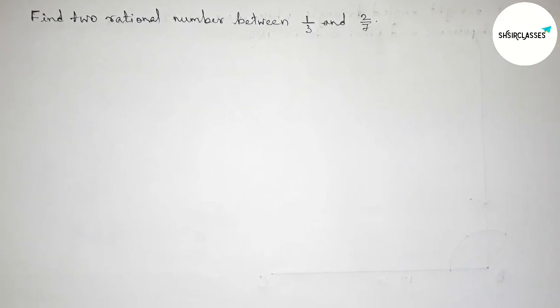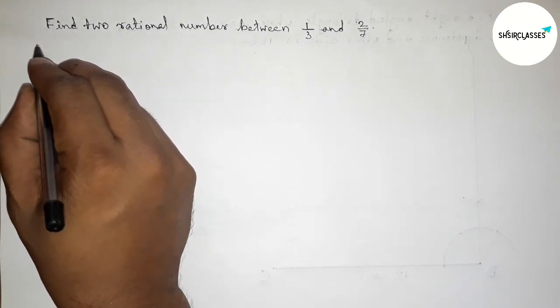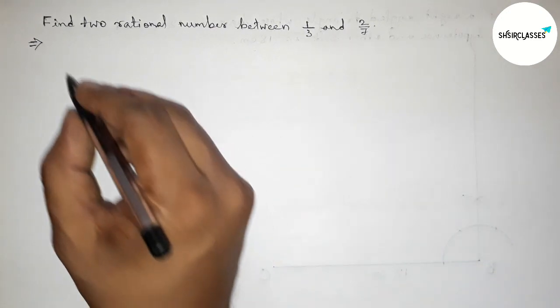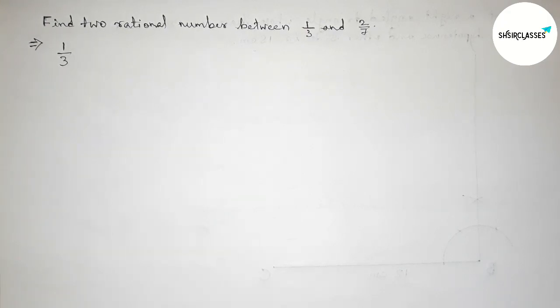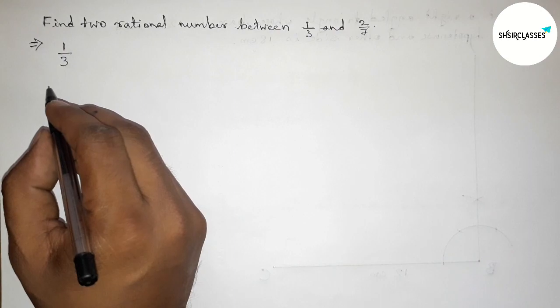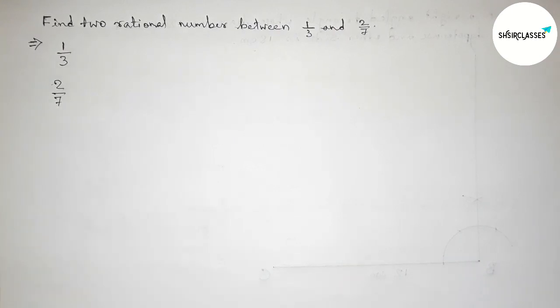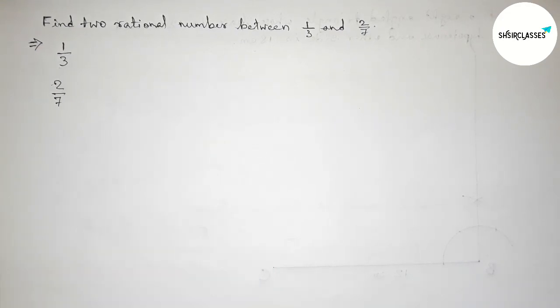First of all, let us solve this problem. Here, the given first rational number is 1/3 and the second one is 2/7. Here both the denominators are not the same.